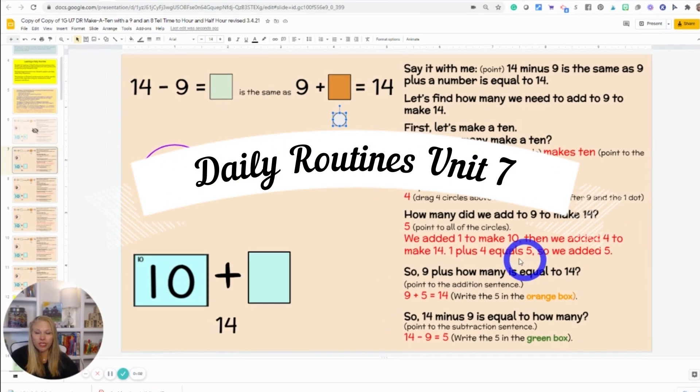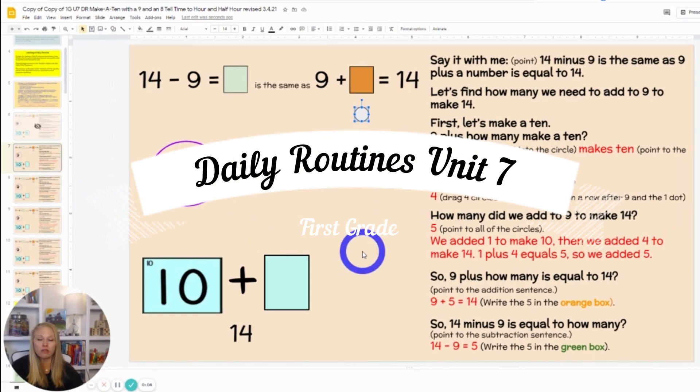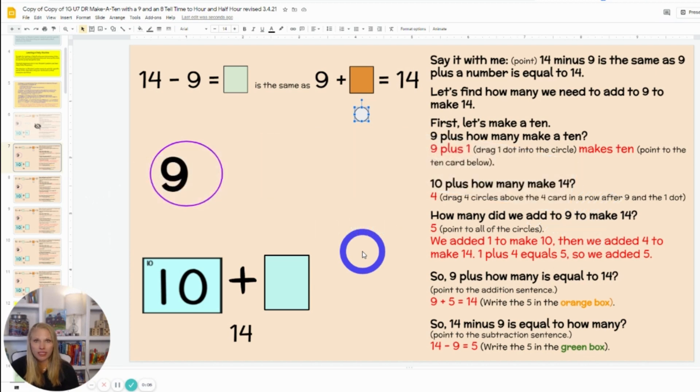All right, daily routines for first grade unit seven. We're going to continue to build automaticity now with our make a 10 facts, specifically in our subtraction equations, which tend to be more difficult for students.